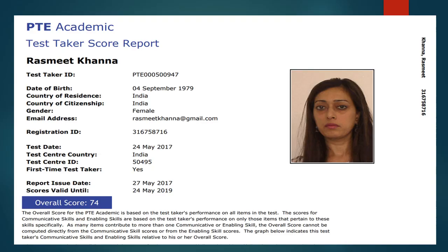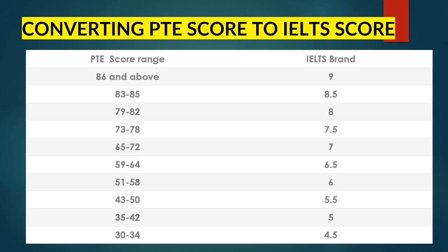Here you can take a look at my score report where I scored 74 points, which is equal to 7.5 bands in IELTS, and I'm going to share the tips and tricks to help you score a good band. The PTE to IELTS conversion is: 86 and above is 9 bands, 83 to 85 is 8.5, 79 to 82 is 8, and 73 to 78 is 7.5, and the list goes on.